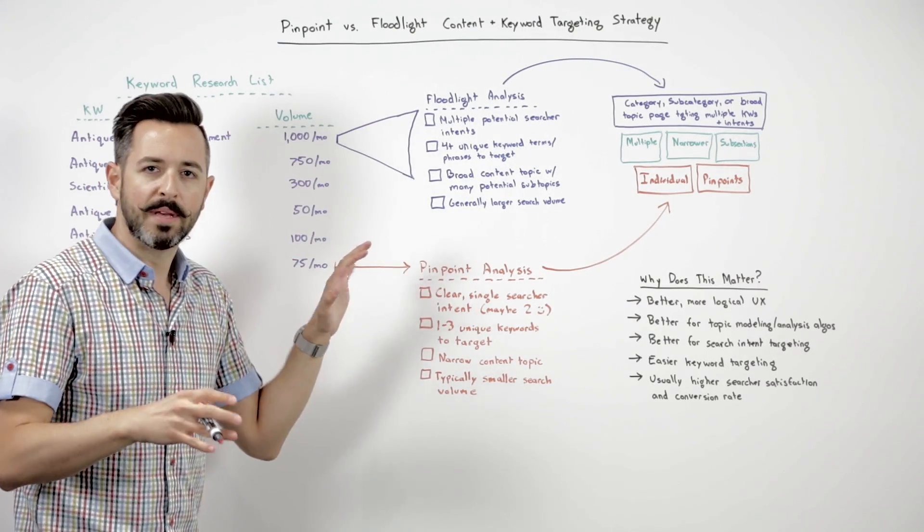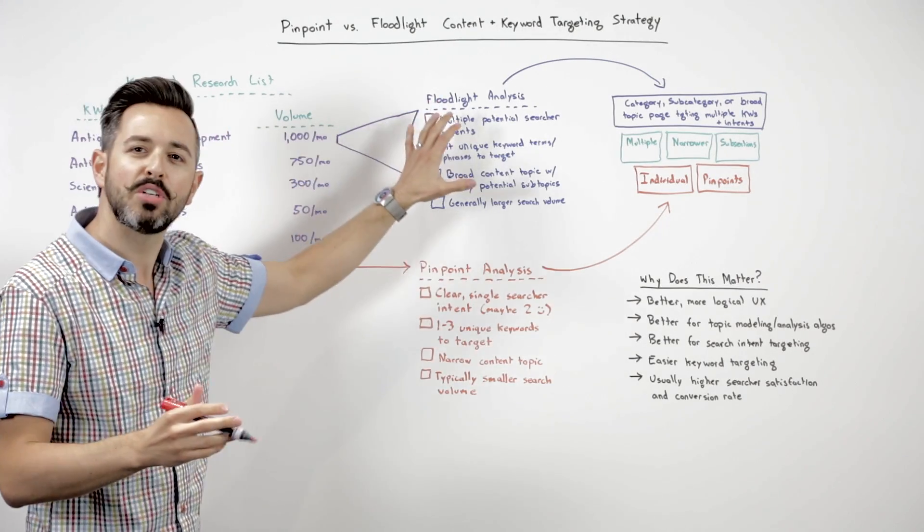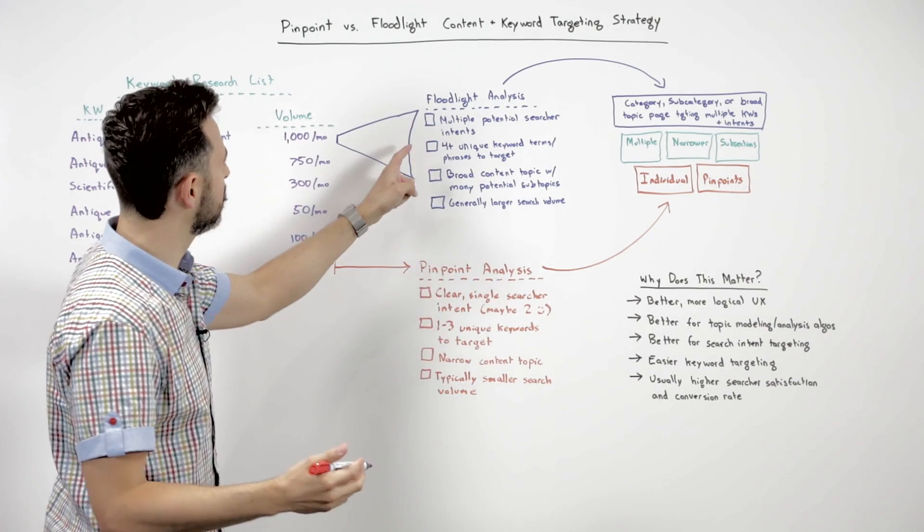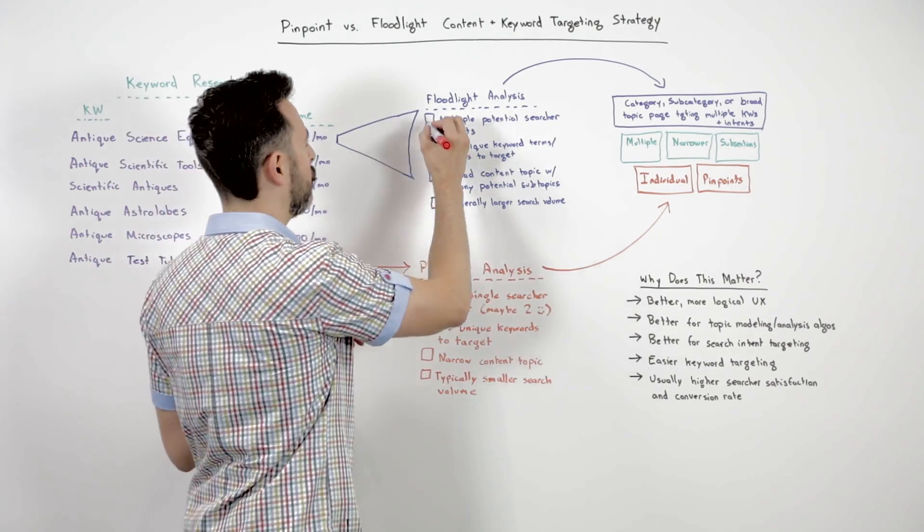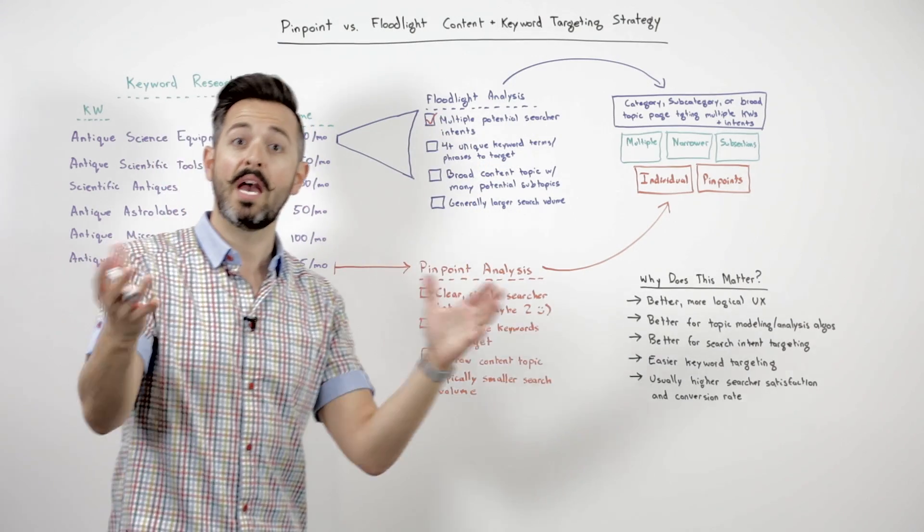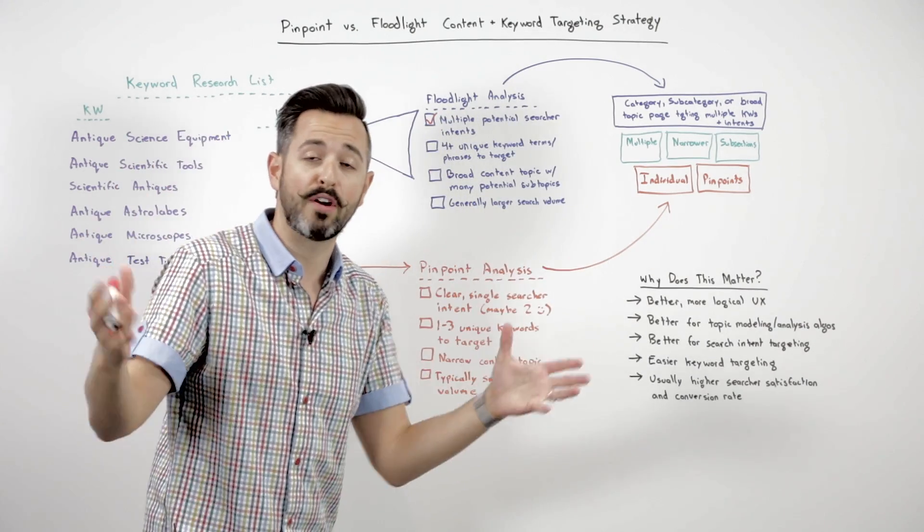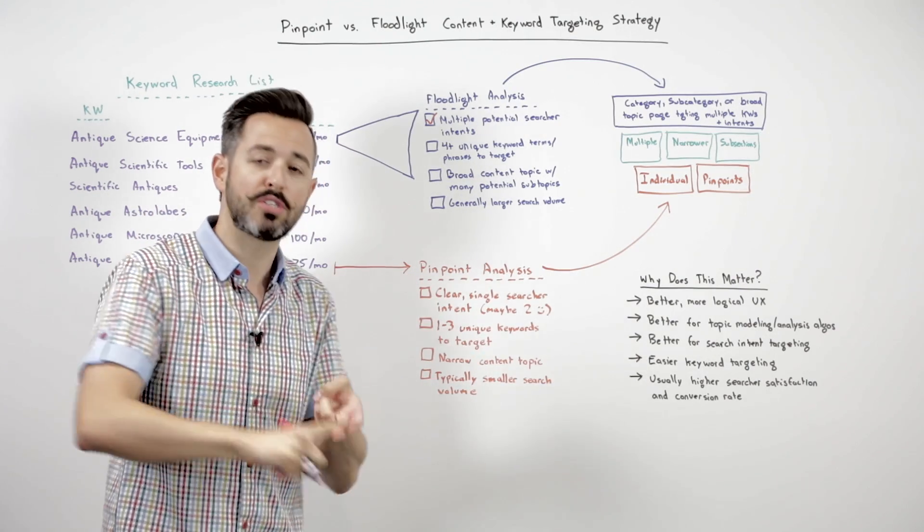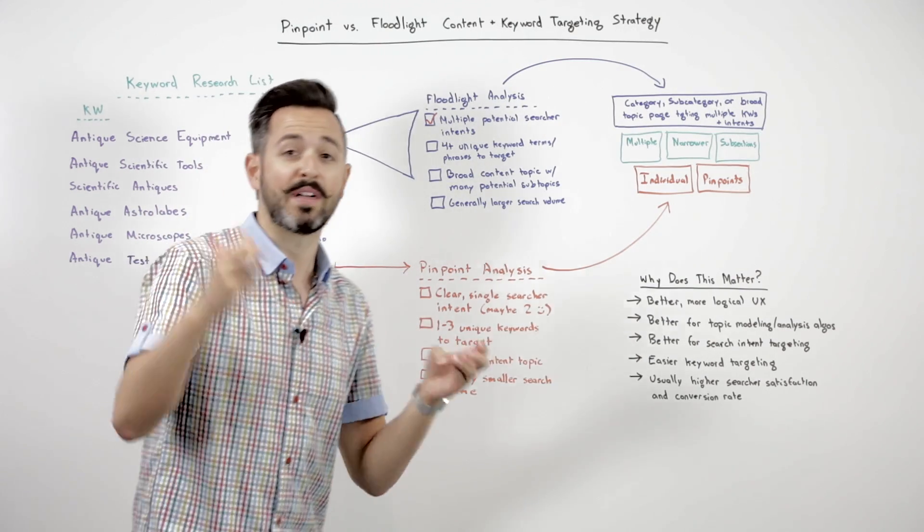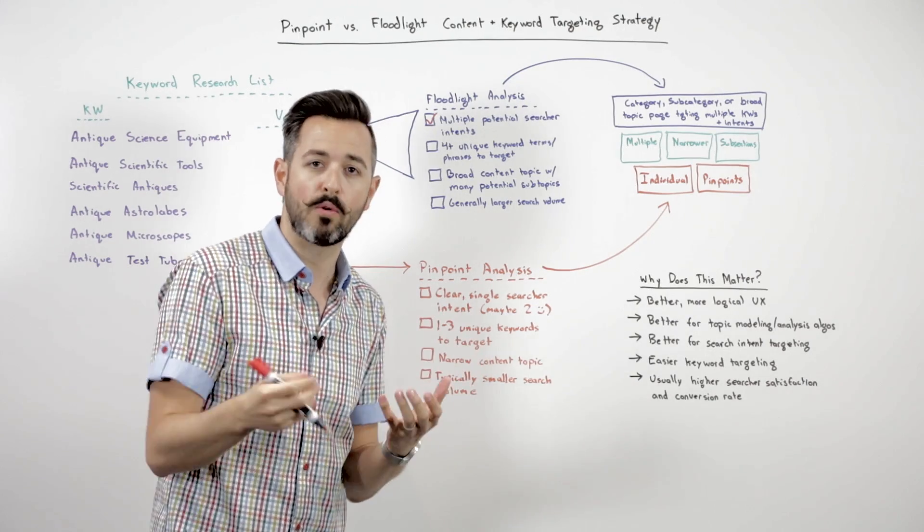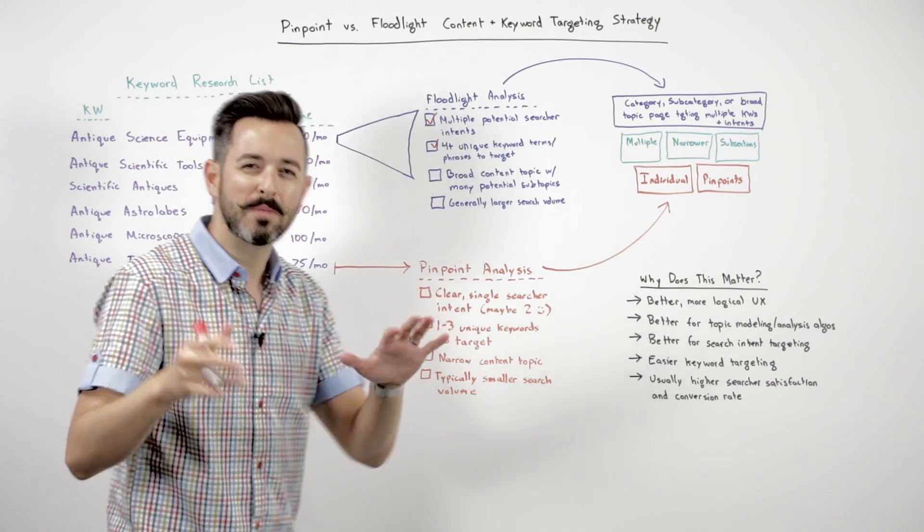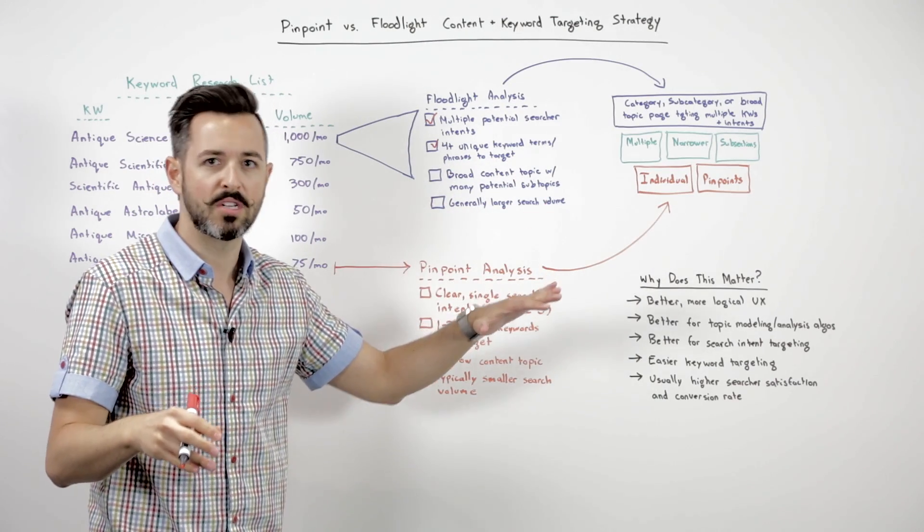For antique science equipment, this is a relatively broad phrase. I'm going to do my floodlight analysis on this, and floodlight analysis is basically saying, are there multiple potential searcher intents? Yeah, absolutely. That's a fairly broad phrase. People could be looking to transact around it, looking for research information, historical information, different types of scientific equipment.